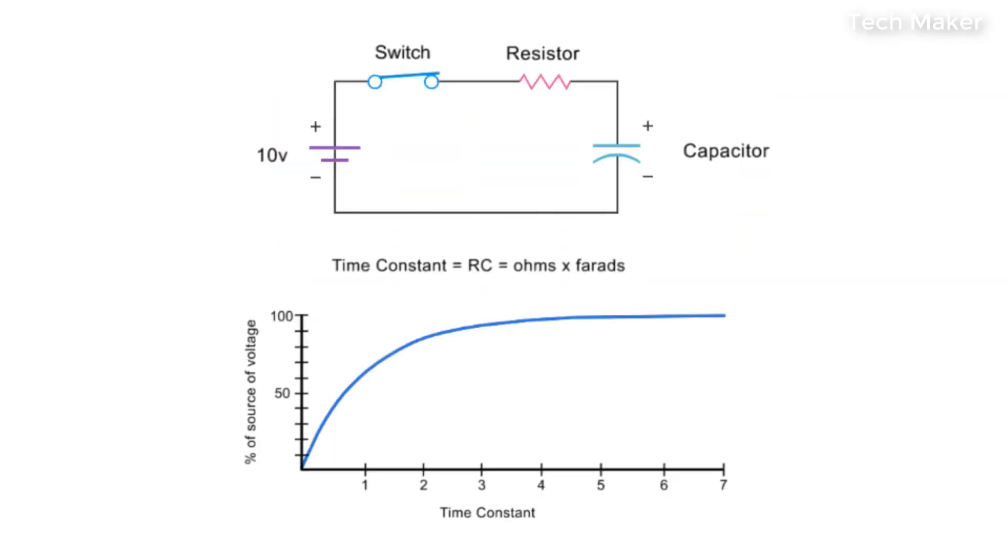For example, in this circuit, if you have a 1 megaohm resistor and 5 microfarad capacitor, the time constant would be 5 seconds.